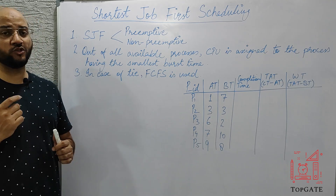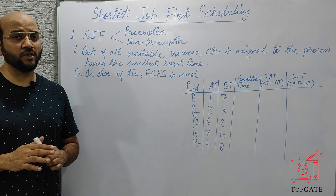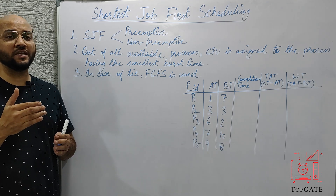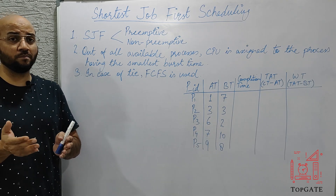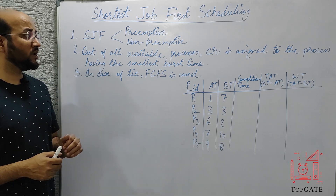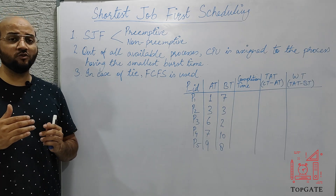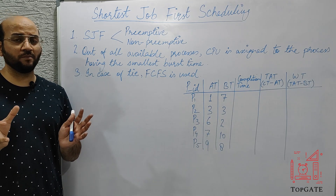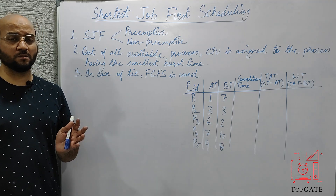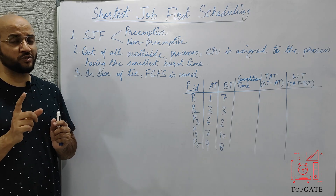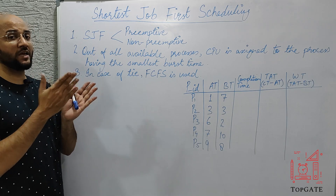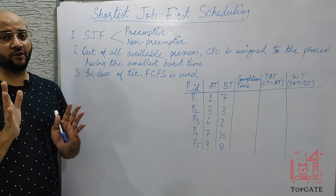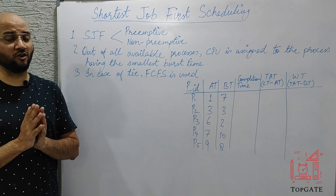To get rid of the convoy effect problem, we have SJF scheduling — Shortest Job First. In FCFS we only considered arrival time, scheduling whichever process arrived first. But in SJF we follow a greedy approach: we schedule the process with the shortest burst time first. So if three processes have burst times of one, two, and three, the one with burst time one is scheduled first.